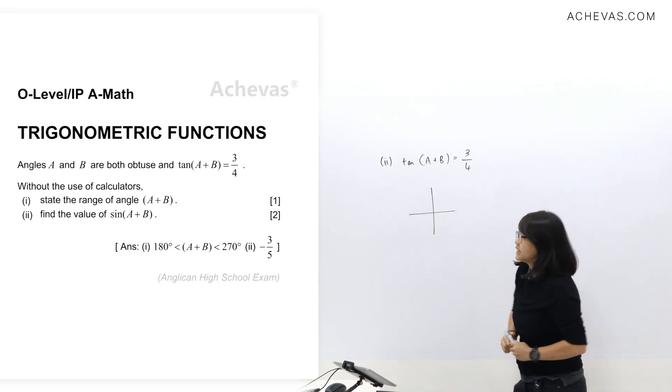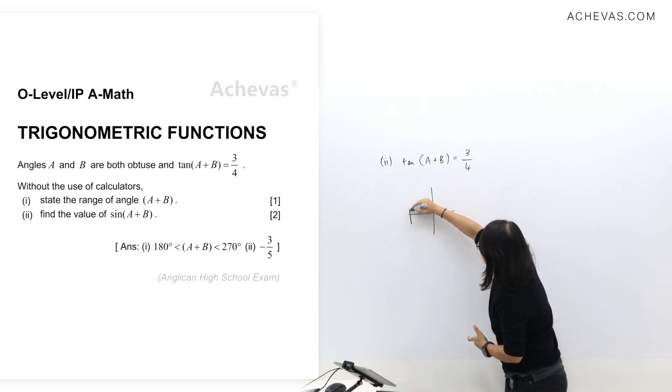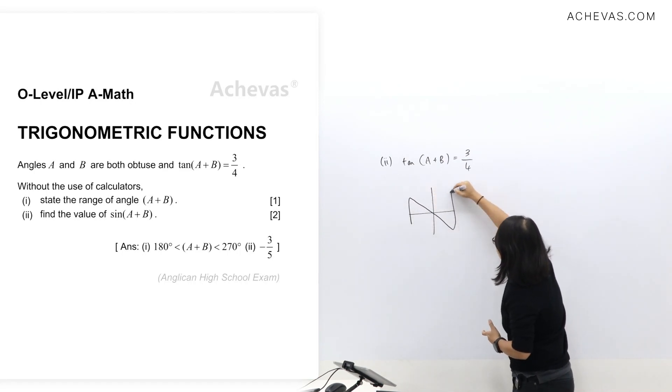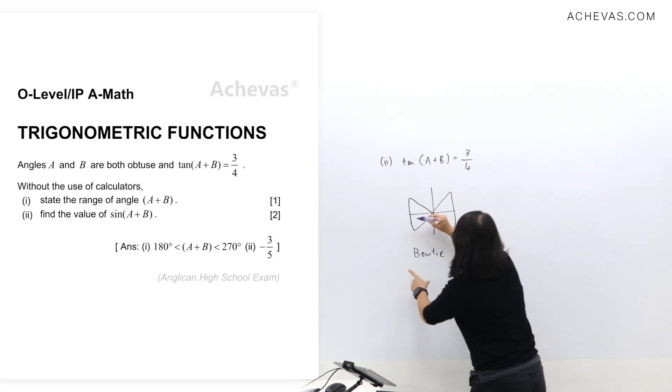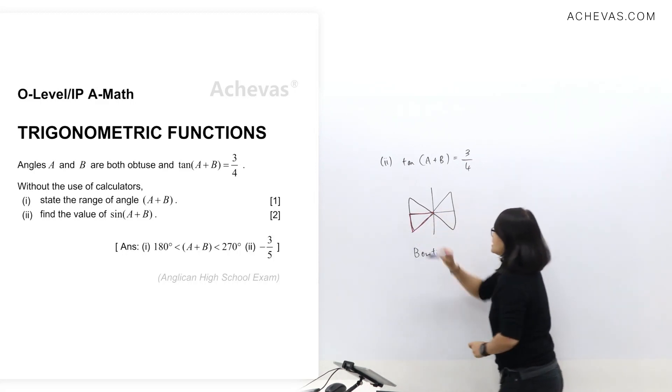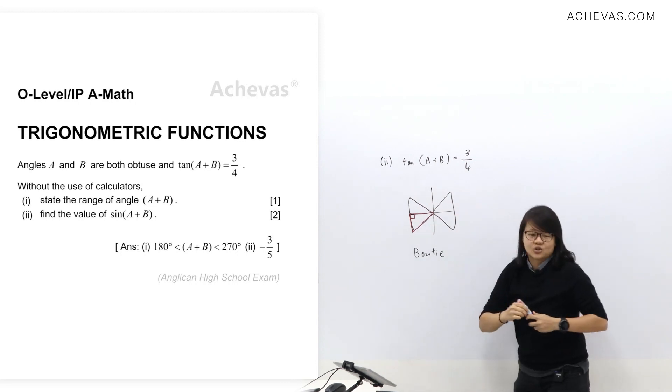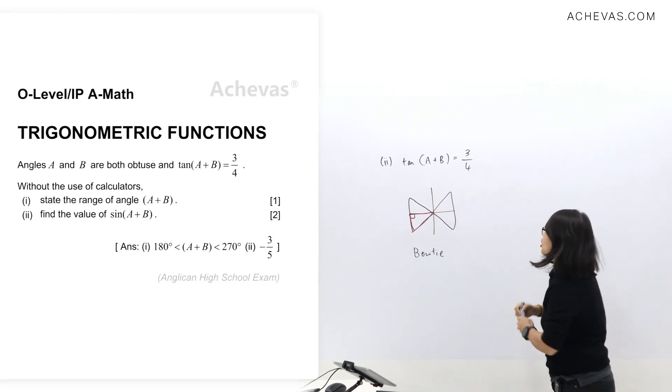Now if you don't remember how to draw a triangle, let's just think of a bow tie. The shape of a bow tie. Now choose the triangle in quadrant 3. So this is the triangle in quadrant 3, right angle.